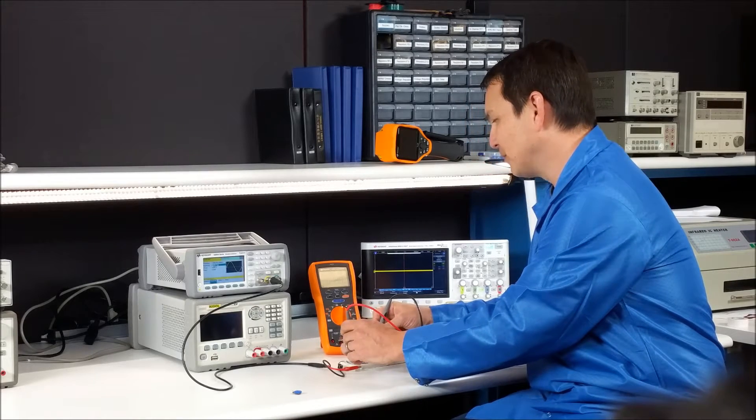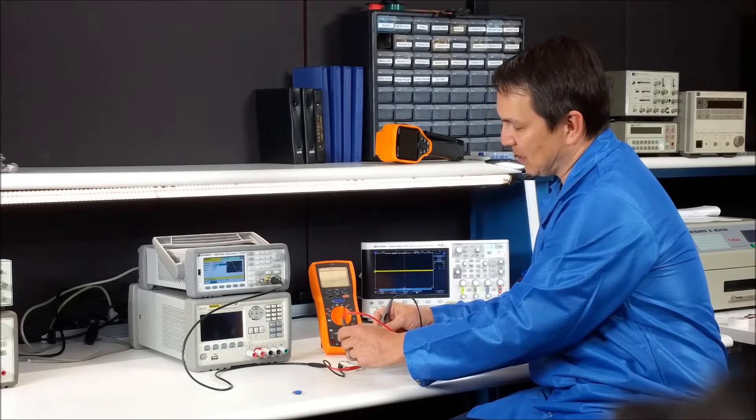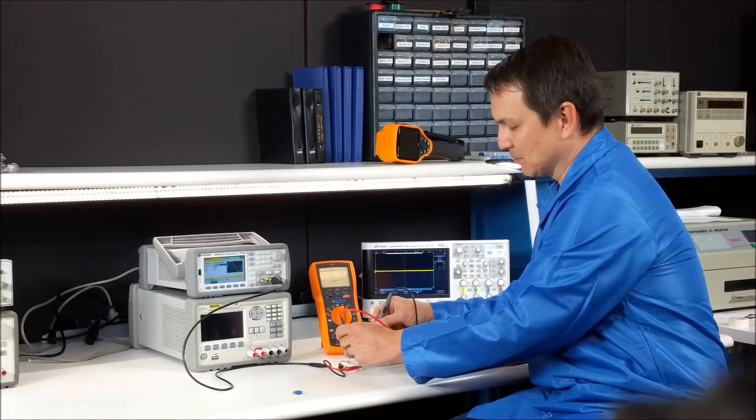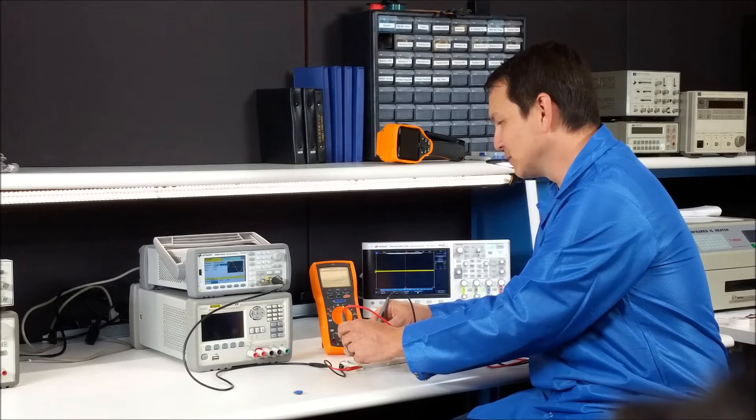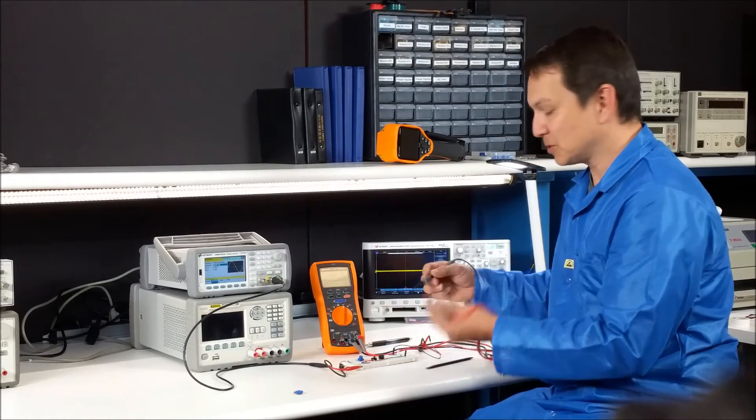So here I have two resistors adding up to a thousand ohms, so two 500 ohm resistors. And so your output of your voltage divider would be half.